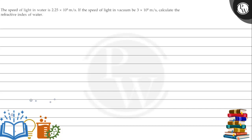Hello, let's read this question. The question says that the speed of light in water is 2.25 into 10 to the power 8 meter per second. If the speed of light in vacuum is 3 into 10 to the power 8 meter per second, calculate the refractive index of water.